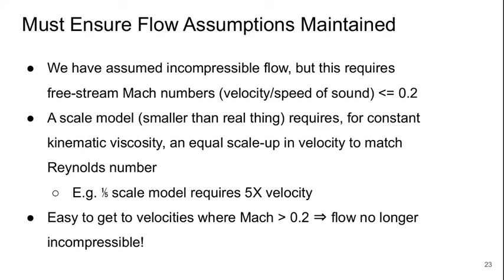And the reason is, we need to make sure that our flow assumptions are maintained. So, we've assumed incompressible flow, but this requires that the freestream Mach number, which is the velocity divided by the speed of sound, is less than about 0.2. Now, if we go to a scale model that's smaller than our real thing, we're going to require, for constant kinematic viscosity, an equal scale up in the velocity in order to match the Reynolds number. So, for example, if we had a one-fifth scale model, we'd need five times the velocity. It's really easy to get to velocities where the Mach number is greater than 0.2 and then the flow is no longer incompressible and our entire basis for our dimensional analysis breaks down.